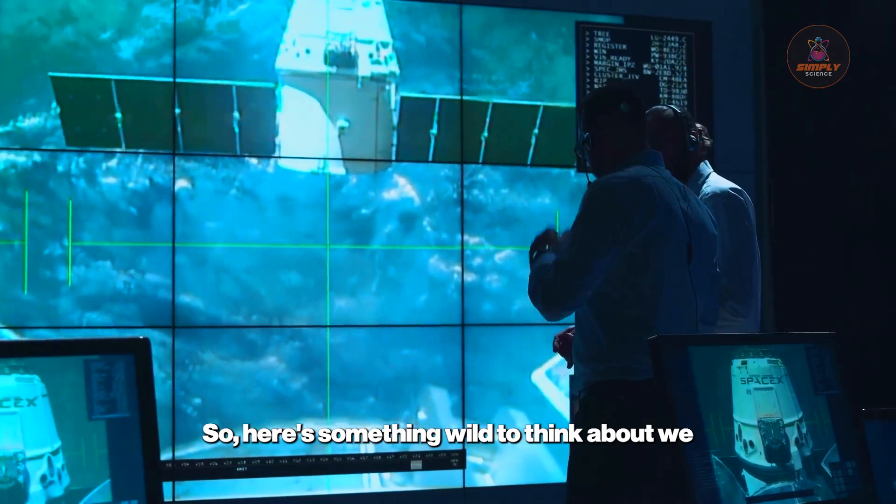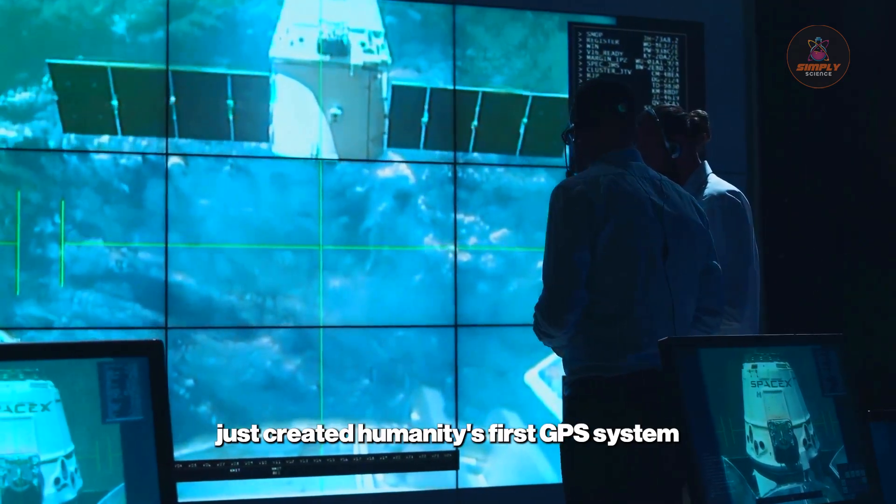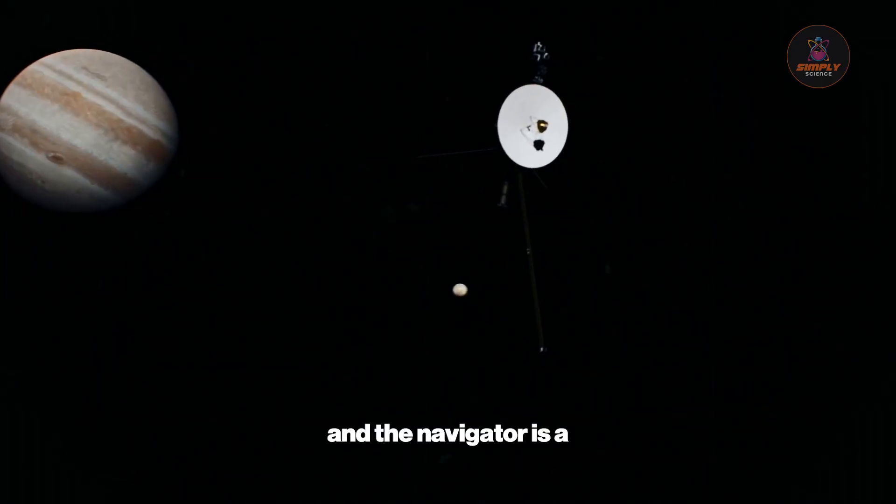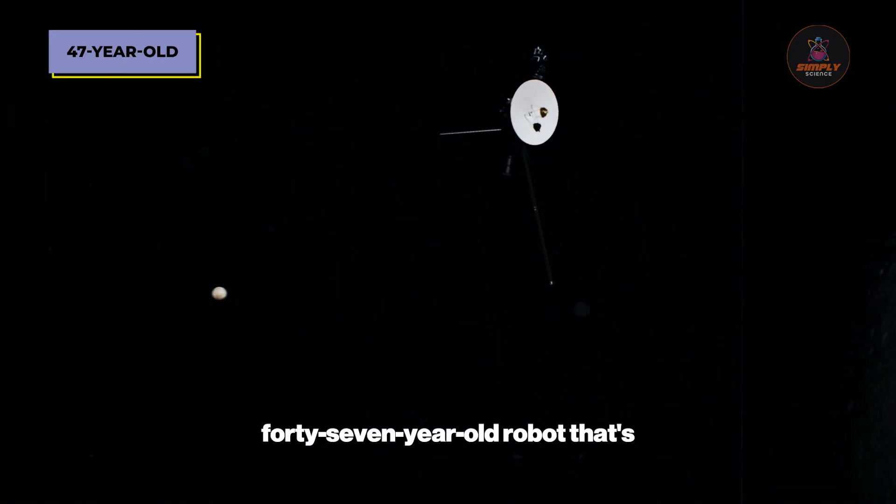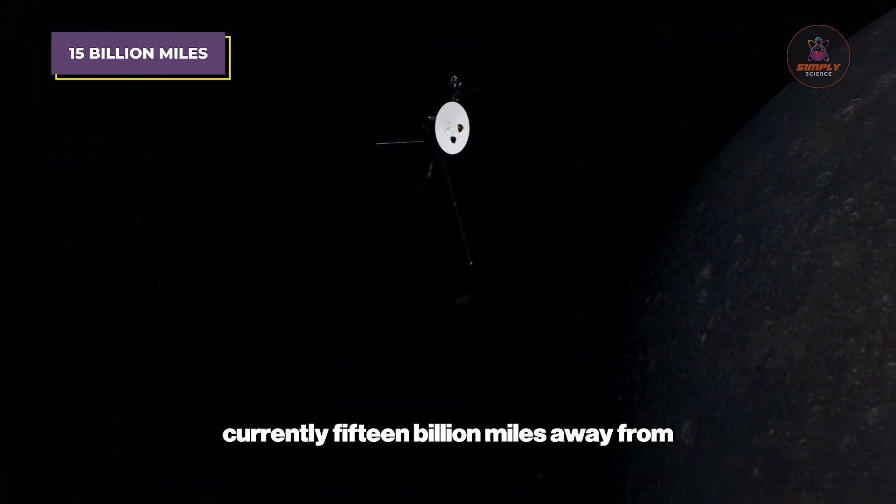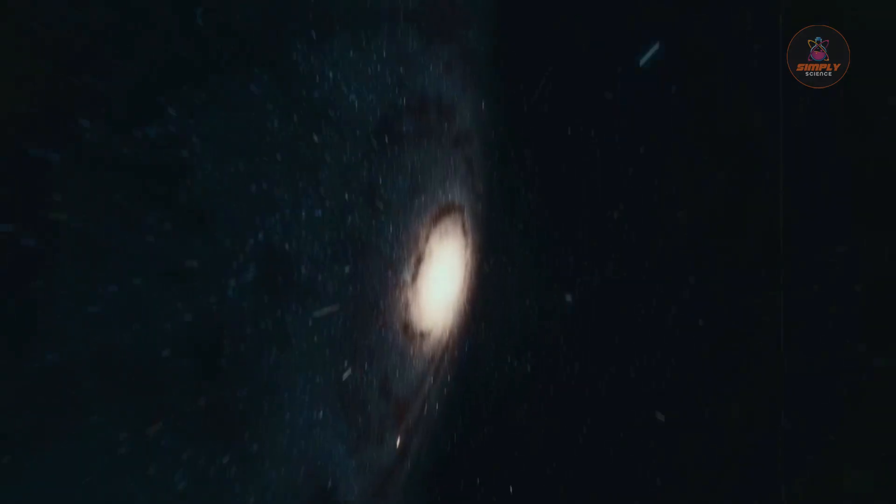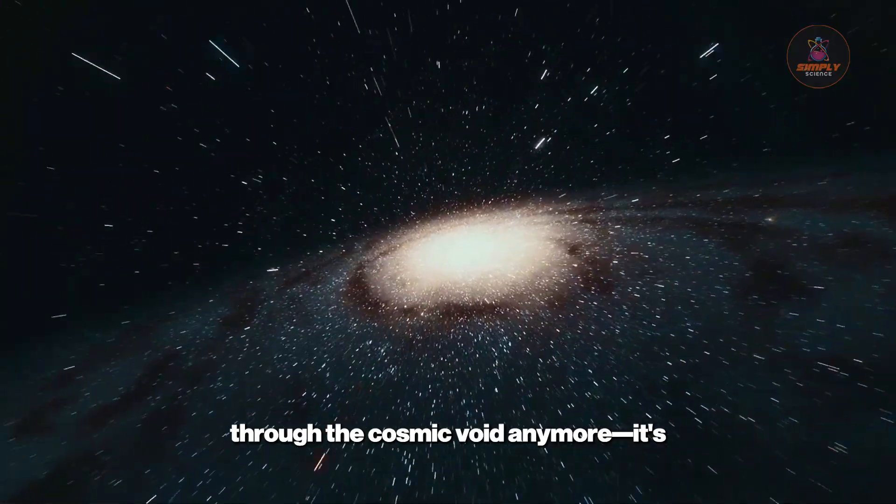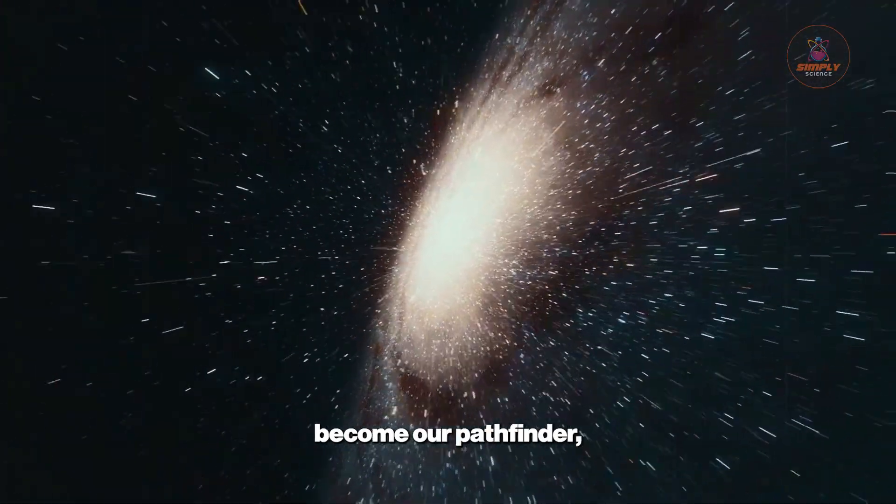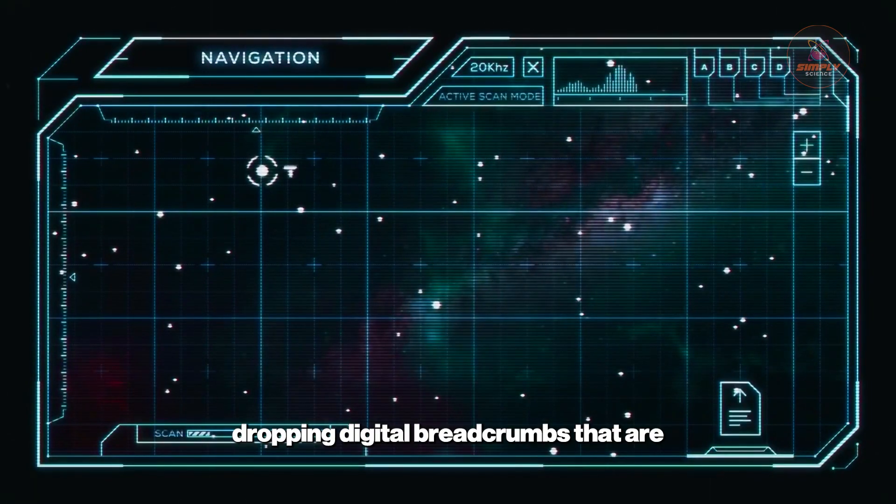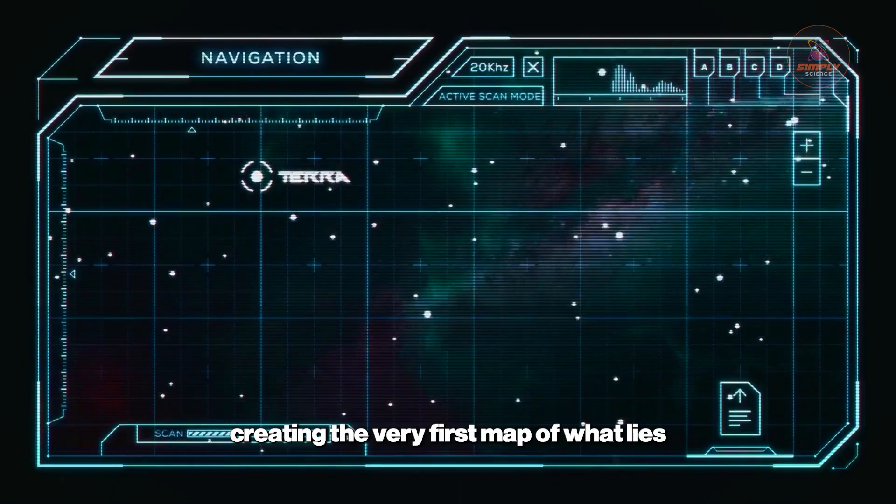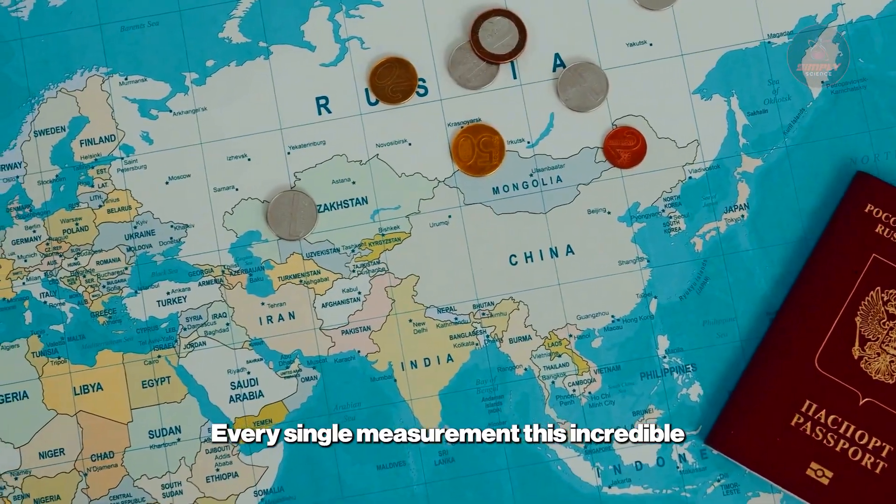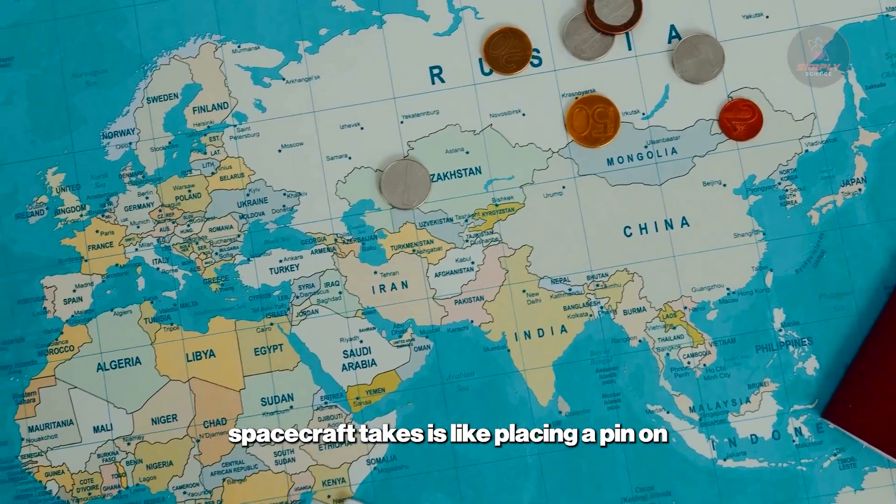We just created humanity's first GPS system for interstellar space, and the navigator is a 47-year-old robot that's currently 15 billion miles away from the nearest mechanic. Voyager 1 isn't just wandering aimlessly through the cosmic void anymore. It's become our pathfinder, dropping digital breadcrumbs that are creating the very first map of what lies beyond our solar system's protective bubble.